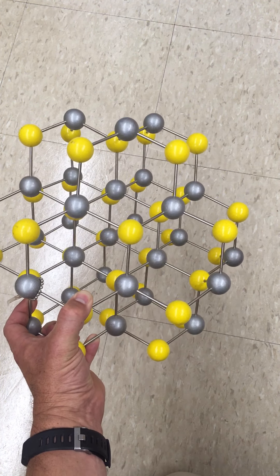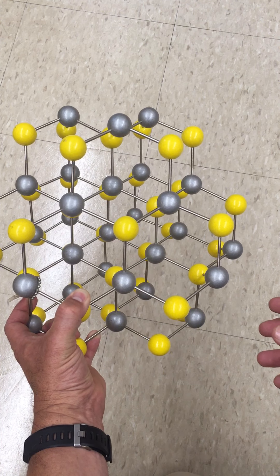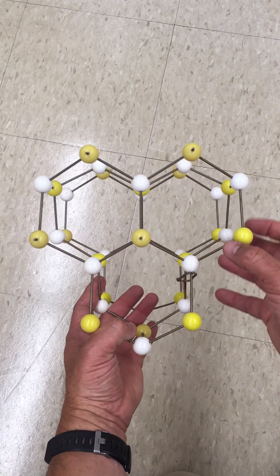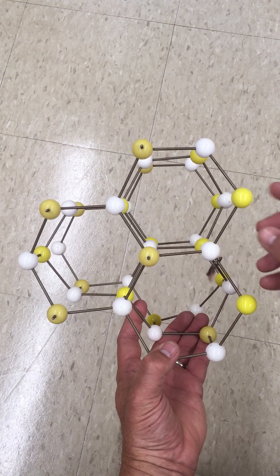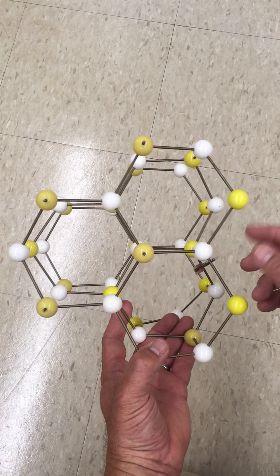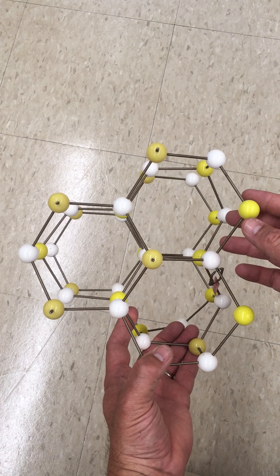Now, there's another crystal variation of zinc sulfide, and that is wurtzite. And here's a structure of wurtzite, and in this structure what we have are yellows as sulfide, and here the white spheres represent the zinc ions.